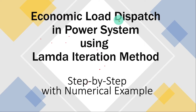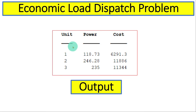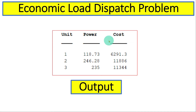This video is based on the economic load dispatch problem in power systems, and we will solve this problem using the lambda tracing method. As you can see here, this is the final output for the numerical example we will solve. We have three units, and for each unit we computed the minimum power and fuel cost.